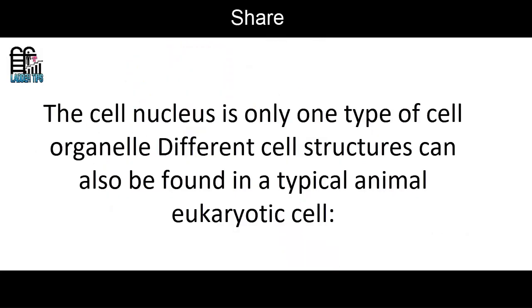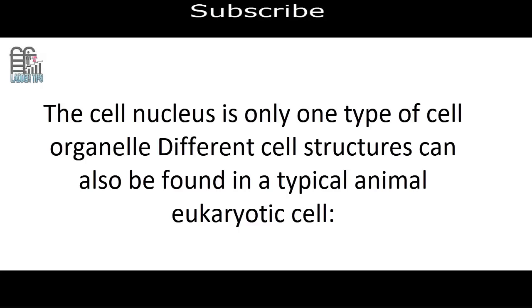The Cell Nucleus is only one type of cell organelle. Different cell structures can also be found in a typical animal eukaryotic cell.